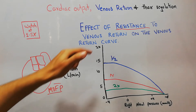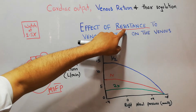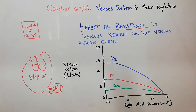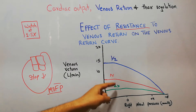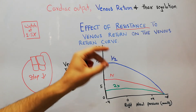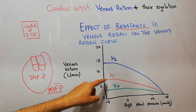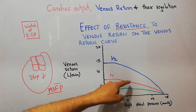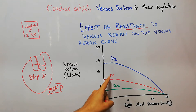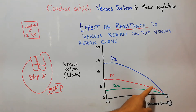Now, how does the increasing and decreasing level of resistance have an effect on the venous return curve? We see that this red color curve is the normal venous return curve.